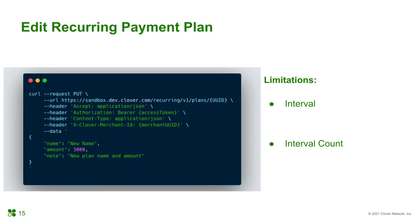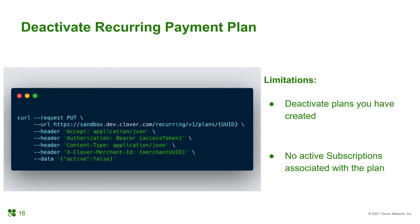Exploring more on the API, you can always edit or delete the plans that you have created. Here is an example of a PUT request to edit the plan. Please be aware that the interval and interval count are non-editable — if you need a new interval or interval count, you will need to create a new plan. If you don't want to delete a plan, you can always deactivate it with a PUT request setting the active status to FALSE. You can only deactivate plans you have created, and only if there are no active subscriptions associated with the plan.